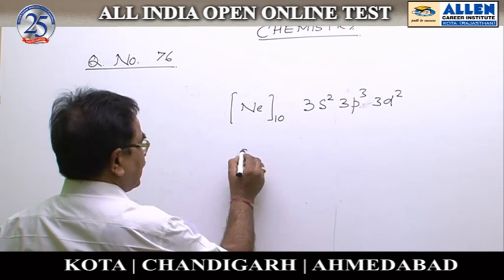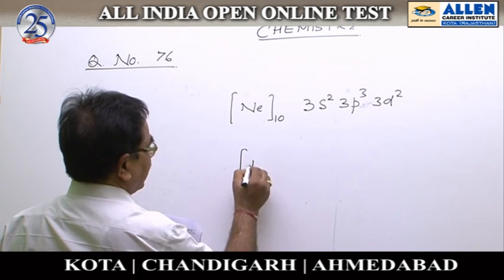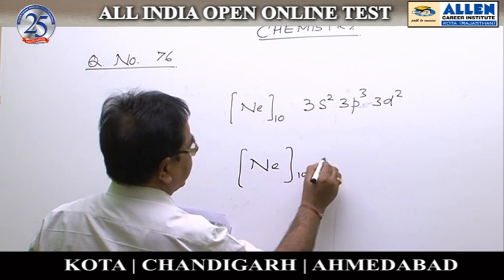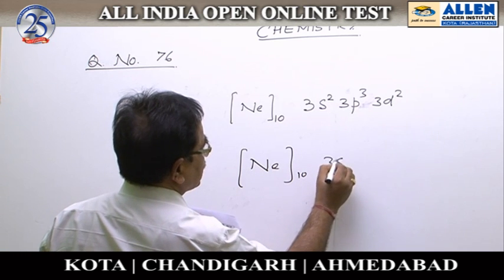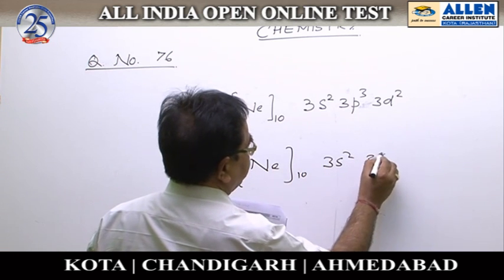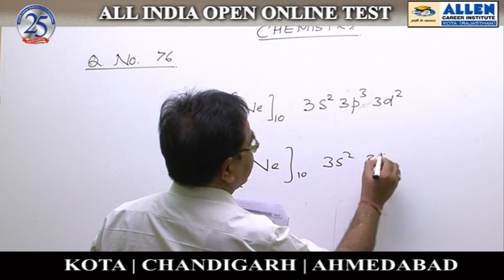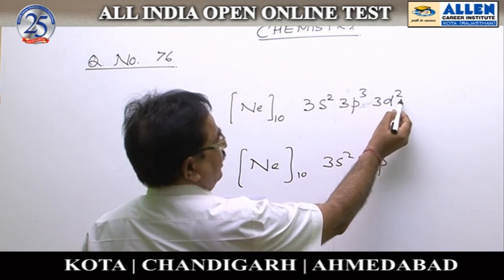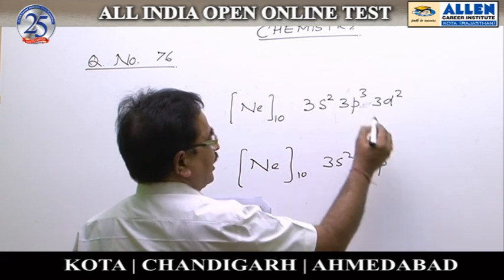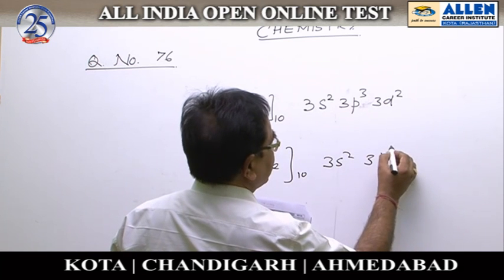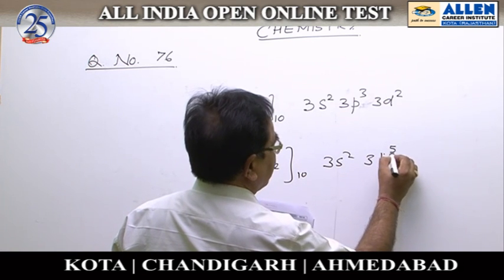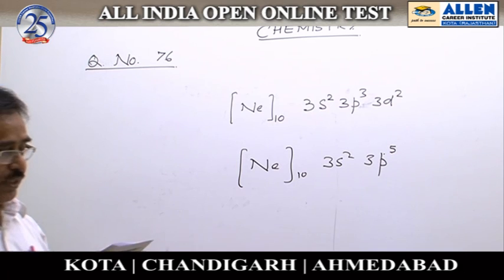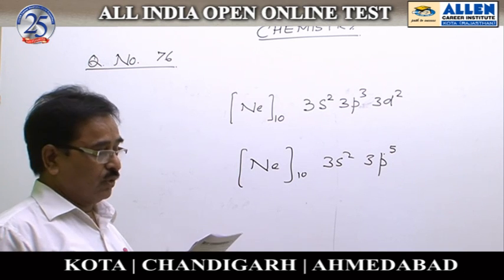The ground state configuration of the element should be 3S2 3P5. Two electrons are in the excited state; if they come back into their ground state, the configuration becomes 3S2 3P5. This is the configuration of chlorine.